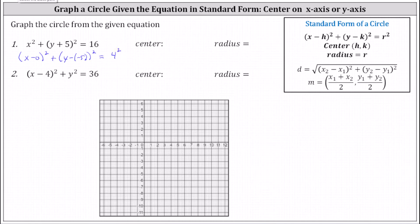Notice in this form, it's easier to identify the center and the radius. The center is the point zero, comma, negative five, and the radius is four.